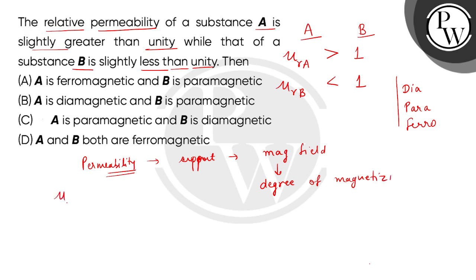So children, if we talk about relative permeability μr, this is the ratio of permeability of the specific medium to the permeability of the free space.